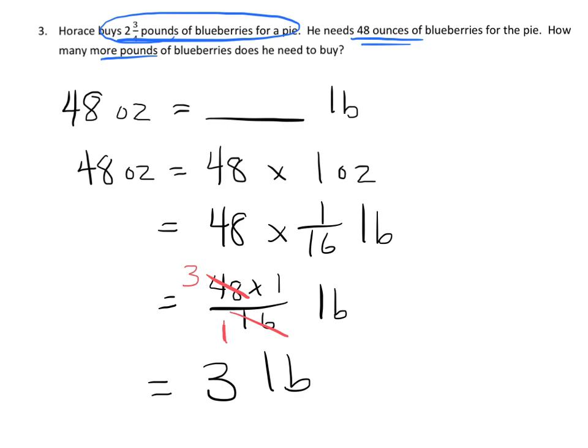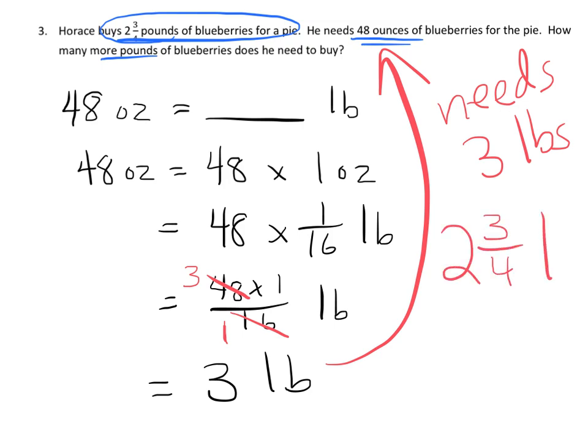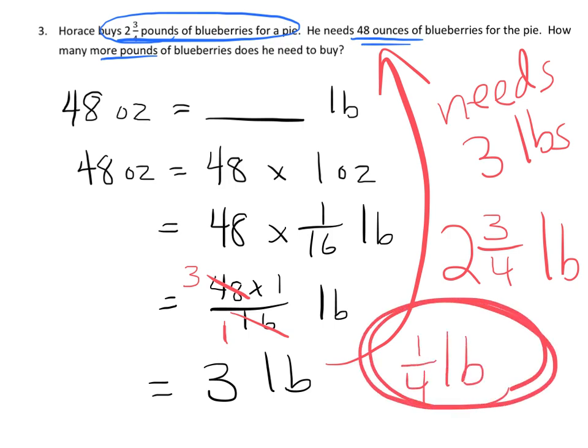So Horace needs 3 pounds. He needs 3 pounds. He has 2 and three-quarters pounds. So what does he need? What more does he need? He needs 1 quarter pound more of blueberries. And that is the answer for that question.